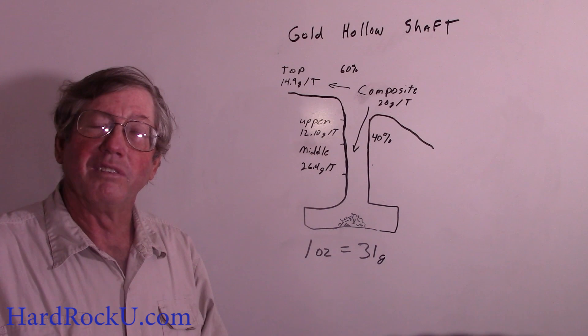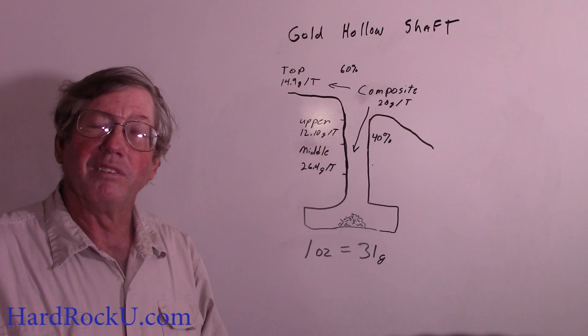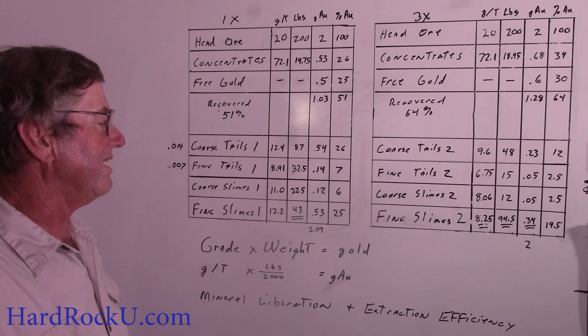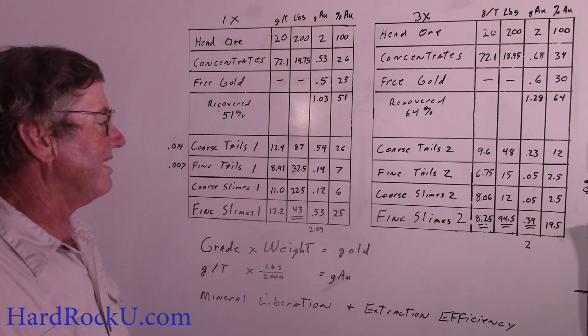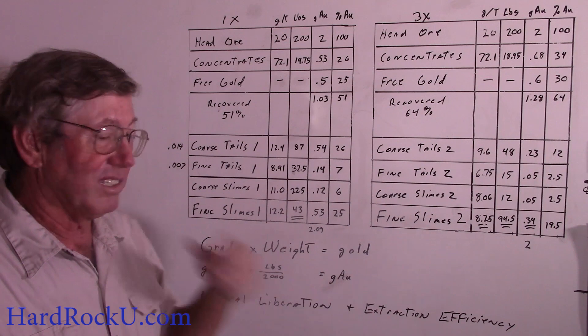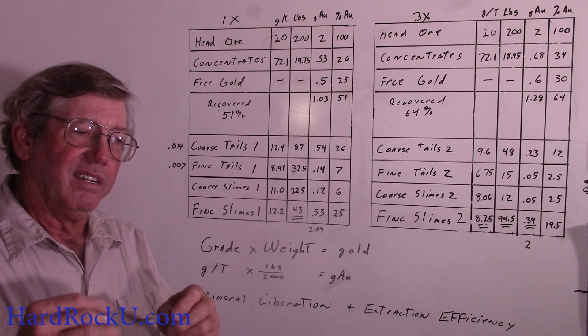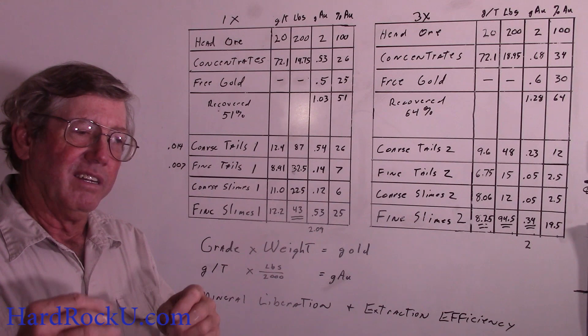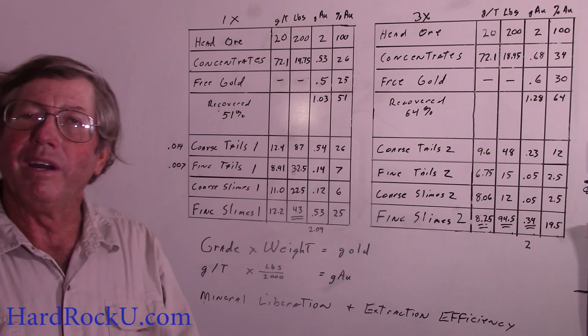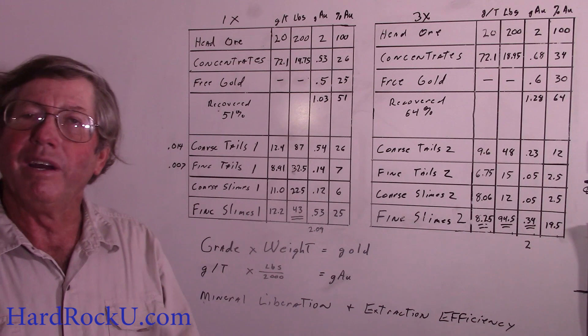Now, to continue on to the actual test results from the pilot scale processing. The processing depends on two things: mineral liberation and extraction efficiency, and we're trying to test both at once, which makes things a little complicated. Mineral liberation is the physical breaking away of the gold, or other valuable mineral, from the matrix — the rock that it's originally in. If you don't break it away, you can't physically separate it. So mineral liberation is critical: first you have to liberate it, then you can separate it.